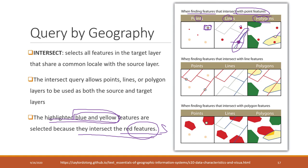We can use all three feature types to intersect with line features. A point intersects with a line when the line passes through it, so that point will be selected. Two lines intersect when they share a common point, so that blue line will be selected. For polygons intersecting with a line, the line passes through two polygons — they share common parts, so those two polygons will be selected.